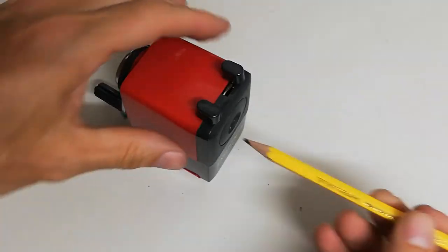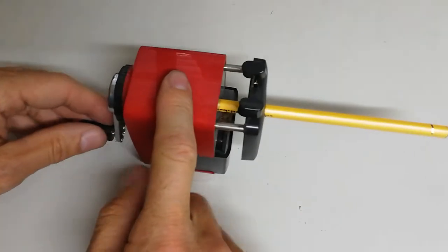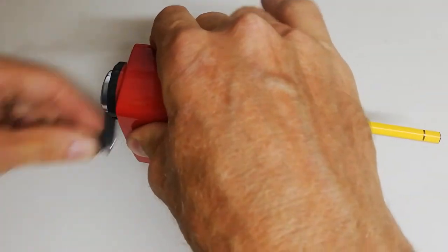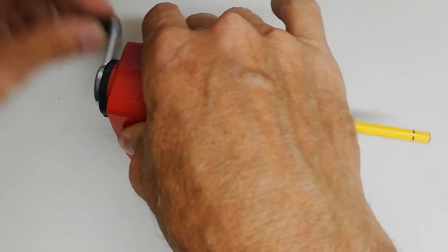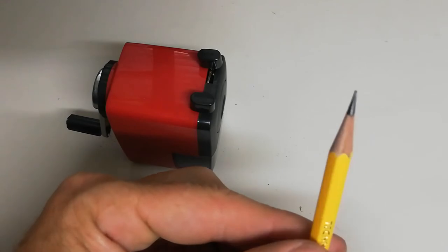Now we test it again, put it back in again and we turn it and you can see that it is now breaking beautifully. If we take it out, this pencil is nice and sharp.